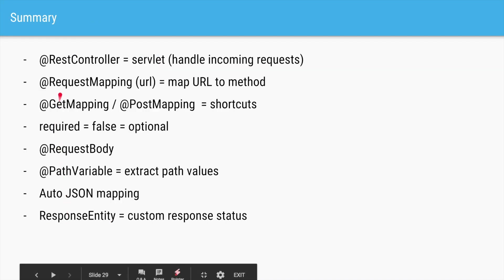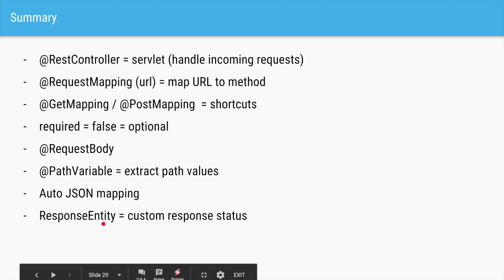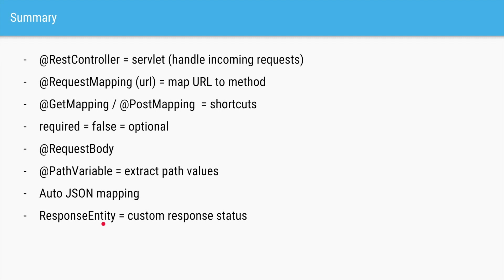To summarize: use @RestController at the top of the class to tell Spring it handles incoming requests. Map methods to URLs using @RequestMapping, with shortcuts @GetMapping and @PostMapping for GET and POST requests. For optional parameters use required=false. For JSON mapping, either return a POJO directly — it will be converted to JSON — or accept JSON in the body using @RequestBody. Use @PathVariable to extract path segments, and use ResponseEntity to send custom response messages back to the user.